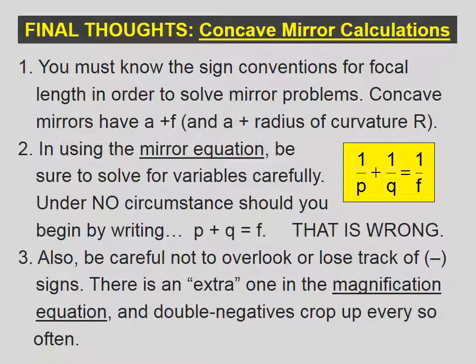You must know the sign conventions for focal length in order to solve mirror problems. Concave mirrors, which is what we dealt with in this lesson, have positive focal lengths and positive radii of curvature. In using the mirror equation, be sure to solve for variables carefully. Under no circumstance should you begin by writing p plus q equals f, because that is wrong. Also, be careful not to overlook or lose track of negative signs. There's an extra one in the magnification equation, and double negatives crop up every so often.